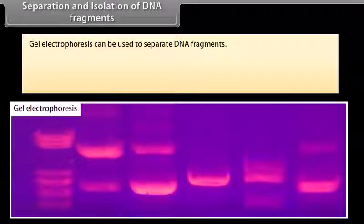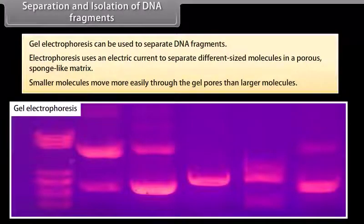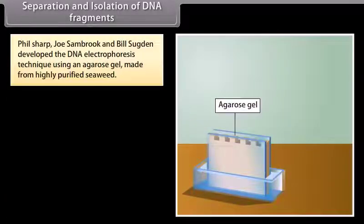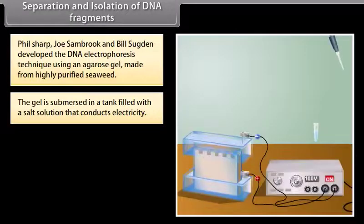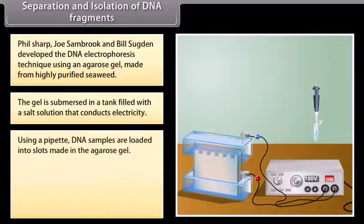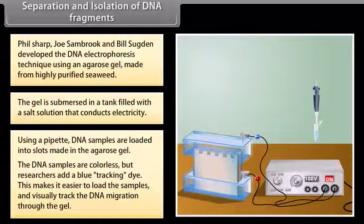Separation and isolation of DNA fragments. Gel electrophoresis can be used to separate DNA fragments. Electrophoresis uses an electric current to separate different-sized molecules in a porous, sponge-like matrix. Smaller molecules move more easily through the gel pores than larger molecules. Phil Sharp, Joe Sambrook, and Bill Surgeon developed the DNA electrophoresis technique using an agarose gel made from highly purified seaweed. The gel is submerged in a tank filled with a salt solution that conducts electricity. Using a pipette, DNA samples are loaded into slots made in the agarose gel. The DNA samples are colorless, but researchers add a blue tracking dye.